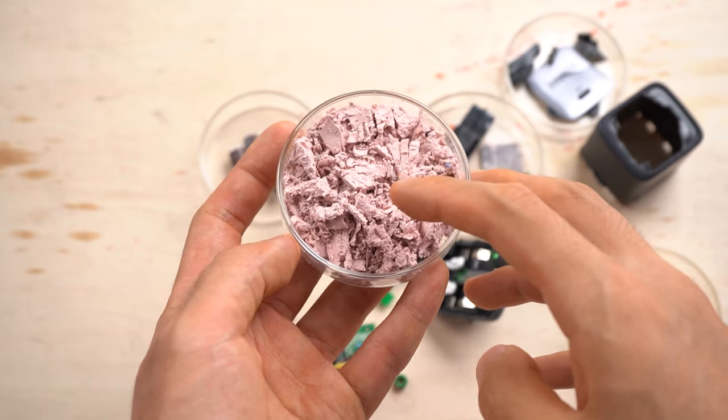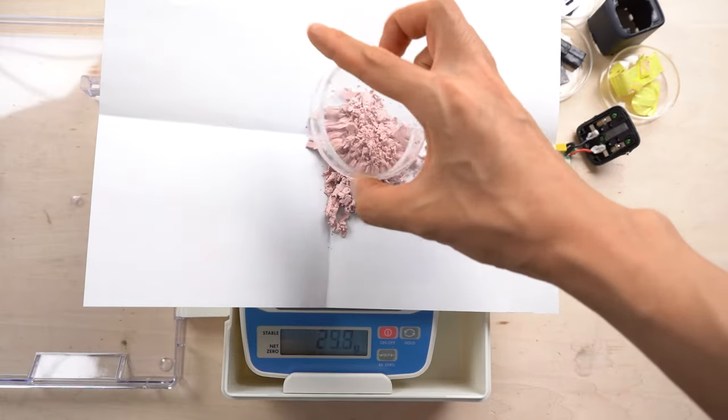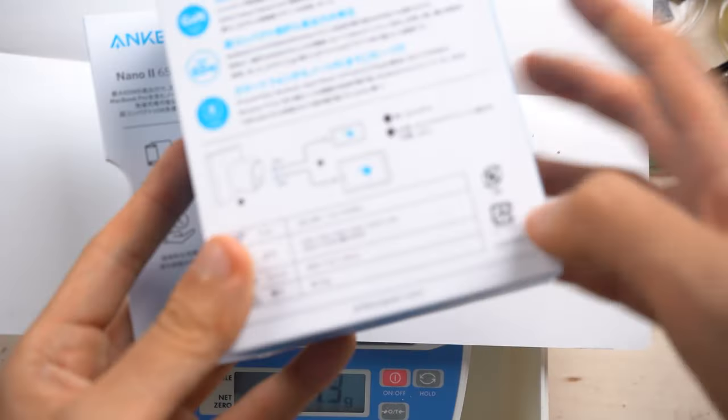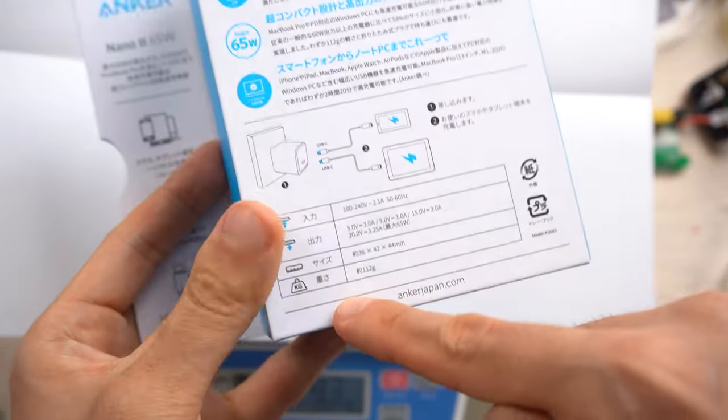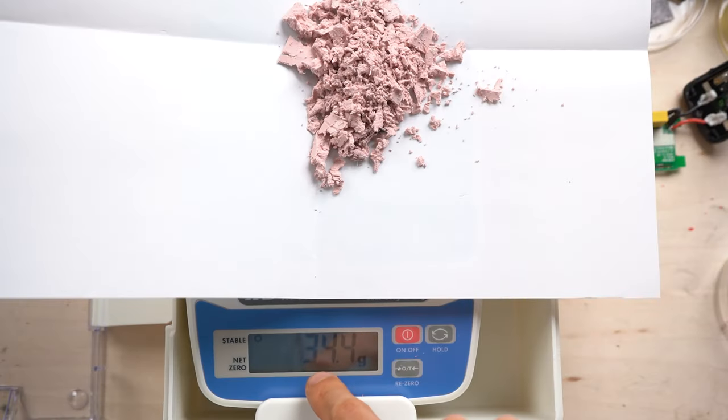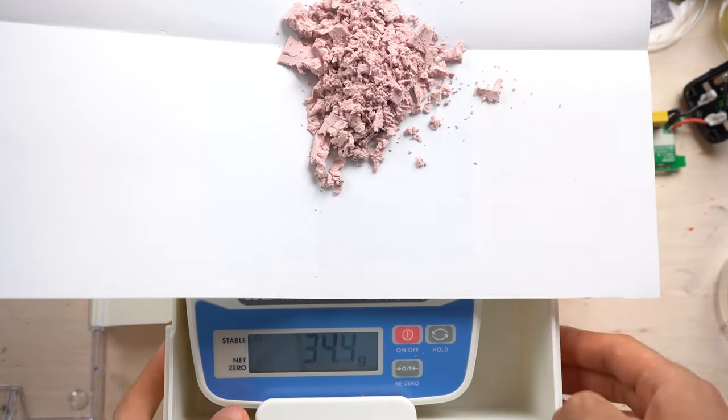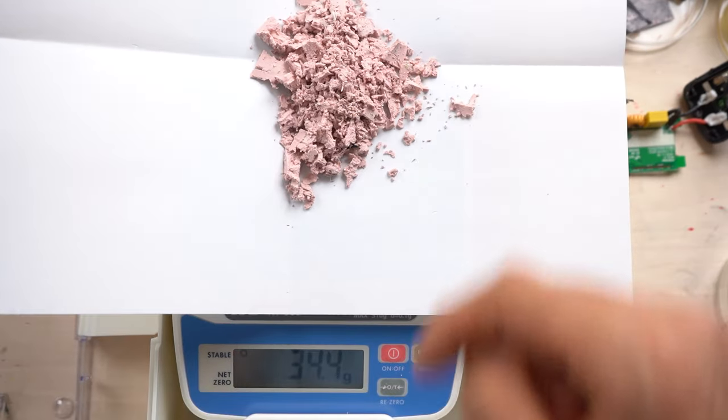I'll measure the weight of the silicone. Let's do it. It's a lot. Look. It weighs 34 grams. The description of Anker Nano 2 65W says the weight is 112 grams. The weight of the silicone is 34.4 grams. The weight of the silicone accounts for 30% of total weight of the charger. A lot of silicone is used.